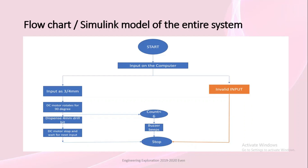Now we have the flowchart for the entire system. The system starts once input is given. If the input is 3mm or 4mm, the DC motor rotates 90 degrees and the drill bit is dispensed; the motor then stops and waits for the next input. The system indicates when the number of drill bits is less than 6 and the buzzer beeps, notifying the user to reload. If the input is other than 3mm or 4mm, it is invalid and the system stops.